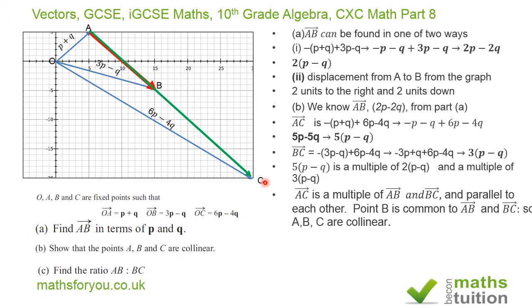Now for part C, it says find the ratio AB to BC. AB is 2(P minus Q) and BC is 3(P minus Q), so the ratio AB to BC becomes 2(P minus Q) to 3(P minus Q).